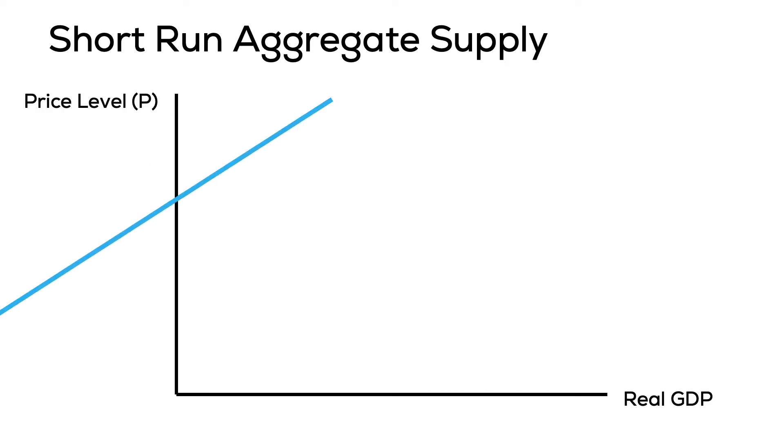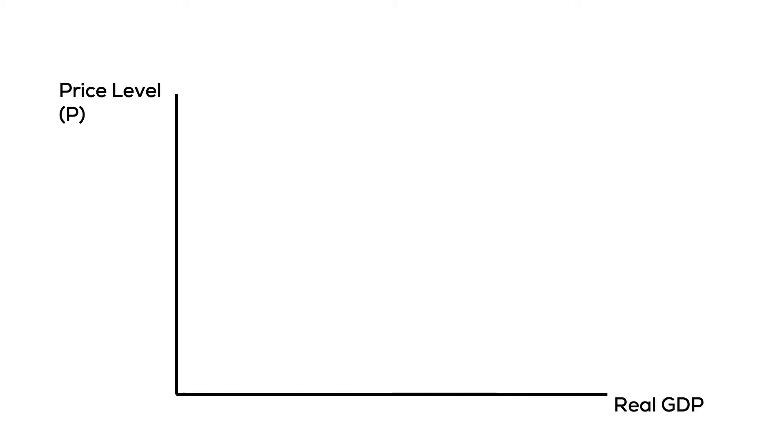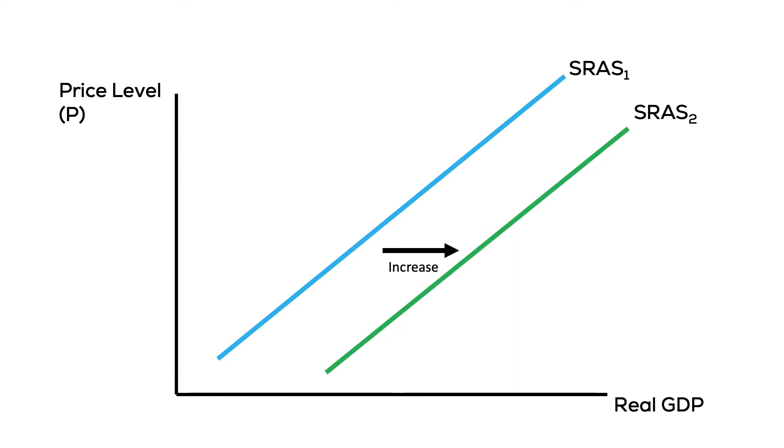Today we're talking about the shift factors of the short-run aggregate supply curve. We have previously discussed the positive slope of the aggregate supply curve and the factors that cause us to move along the aggregate supply curve, also known as changes in the quantity supplied. Now we're interested in what causes the aggregate supply curve to shift entirely at every price level, known as changes in the short-run aggregate supply. We're interested in increases in production when holding prices constant.